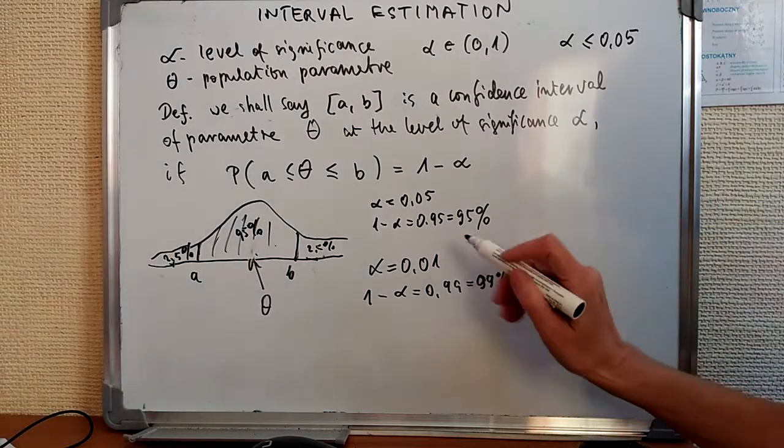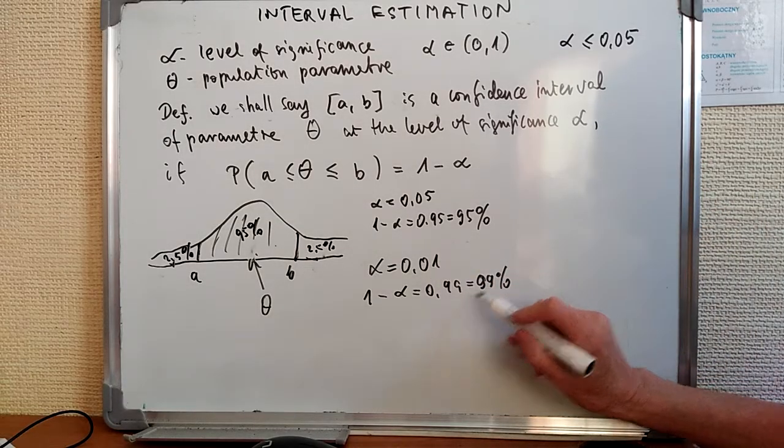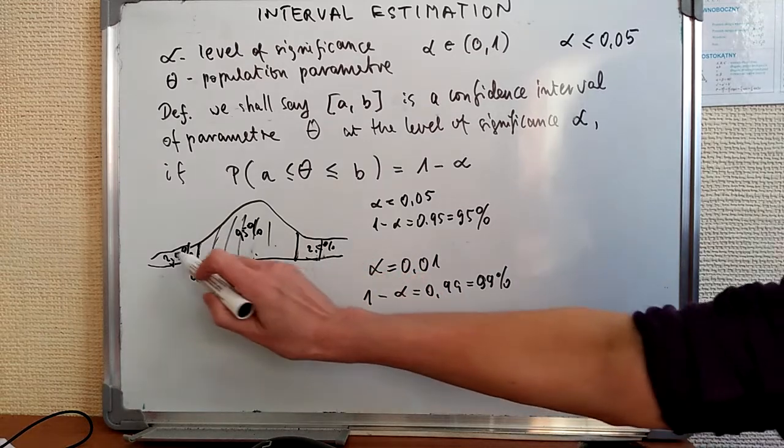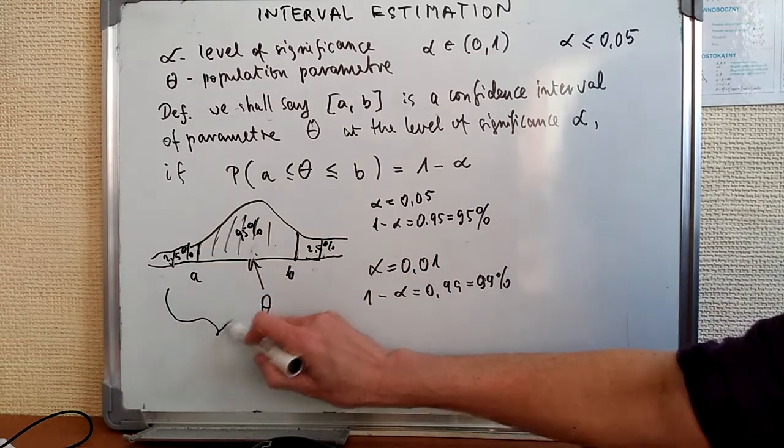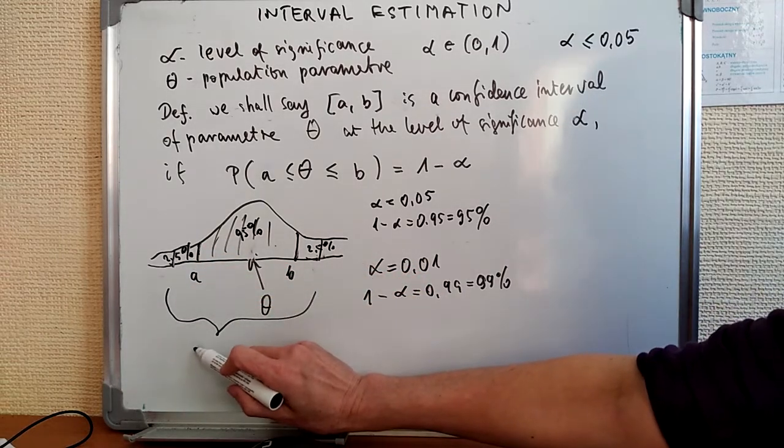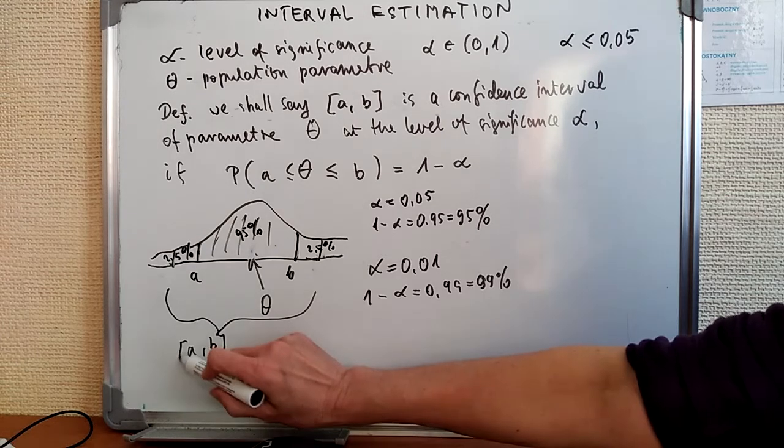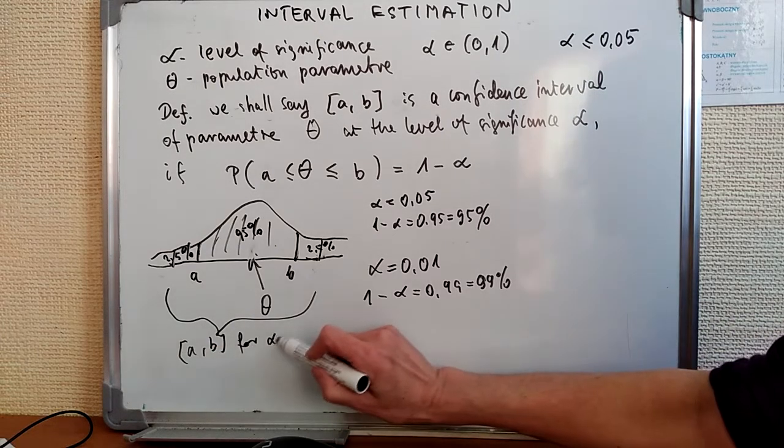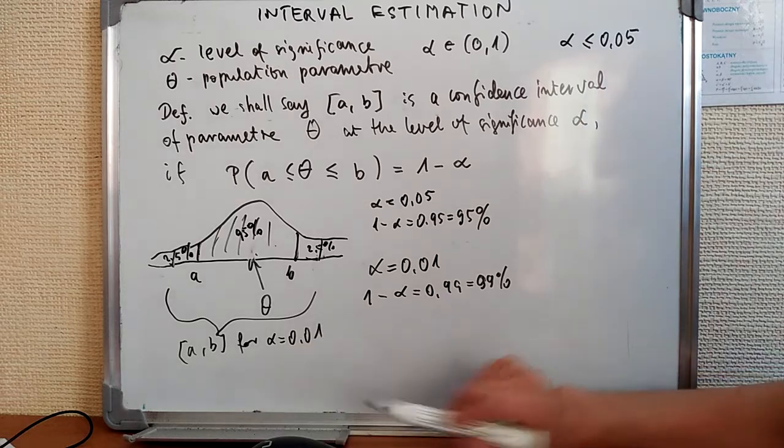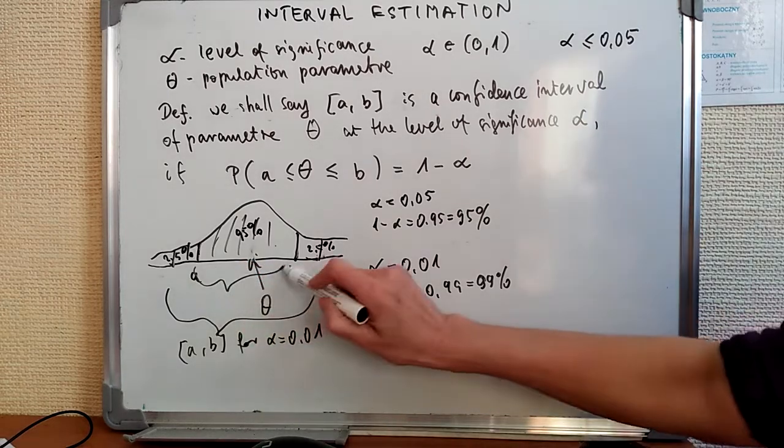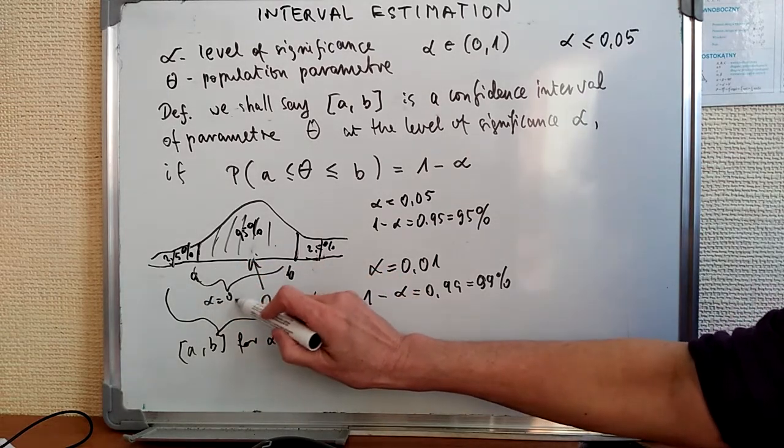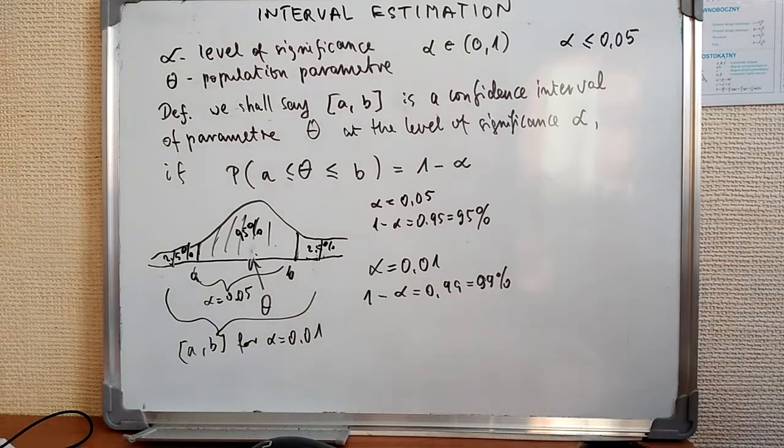So what would it be? So if we took 99%, the wider we would have. So this is a, b for alpha equals 0.01. This is a, b for alpha equals 0.05.